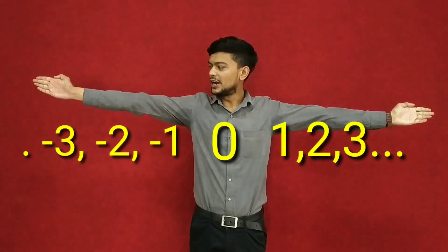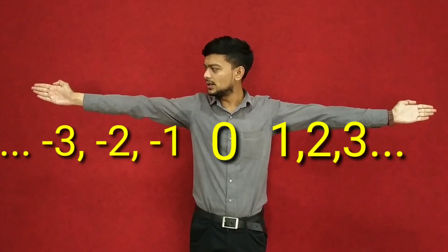On your left hand side, negative numbers like minus 1, minus 2, minus 3, up to 7.